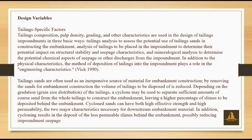Tailings-specific factors — composition, pulp density, grading, and other characteristics — are used in the design of tailings impoundments in three basic ways: analysis to assess the potential use of tailings sand in constructing the embankment; analysis of tailings to be placed in the impoundment to determine potential impact on structural stability and seepage characteristics; and mineralogical analysis to determine the potential chemical aspects of seepage or other discharges from the impoundment.